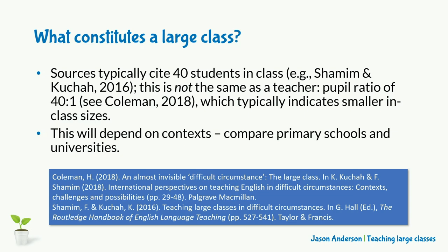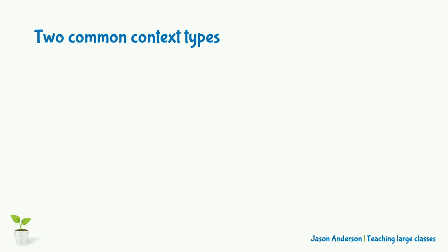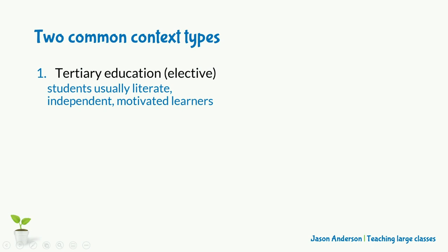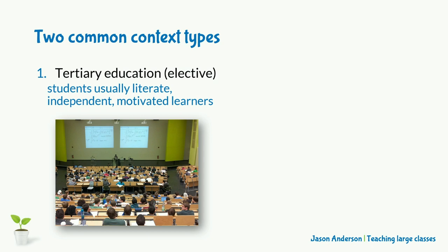There are two broad context types in which large classes often occur. The first is at tertiary level, such as universities and colleges, where particularly lectures, but also seminars, are regularly delivered to tens, even hundreds of learners. In such tertiary contexts, students usually have the literacy and skills to enable them to learn both independently and collaboratively with peers, meaning that the challenges of tertiary large classes are often fewer.